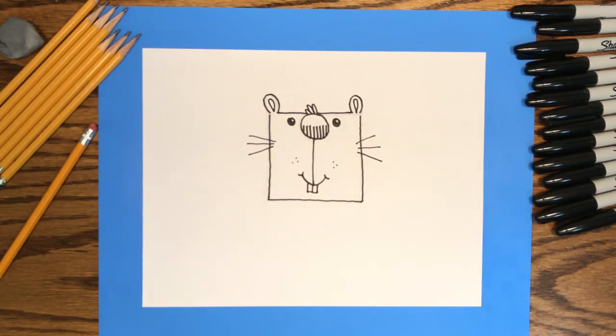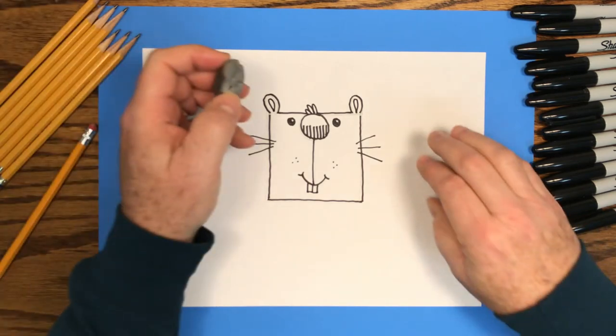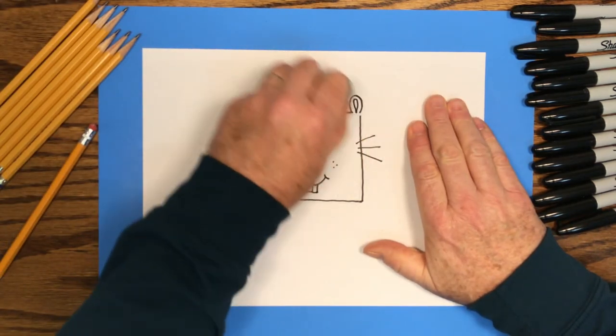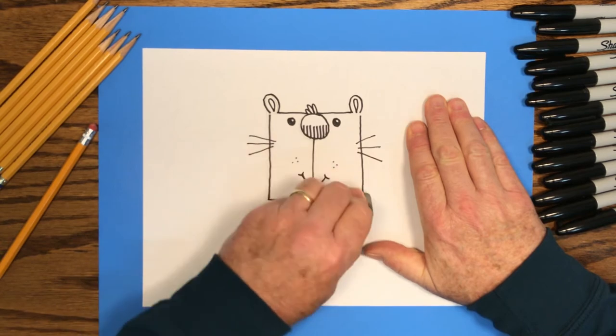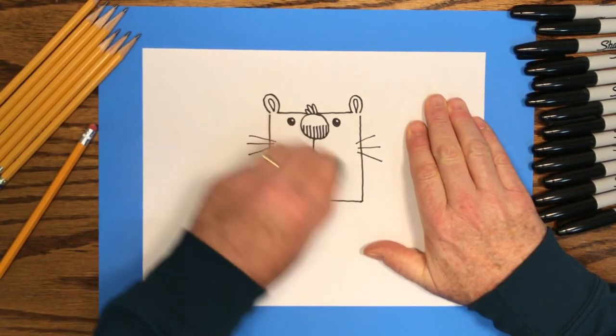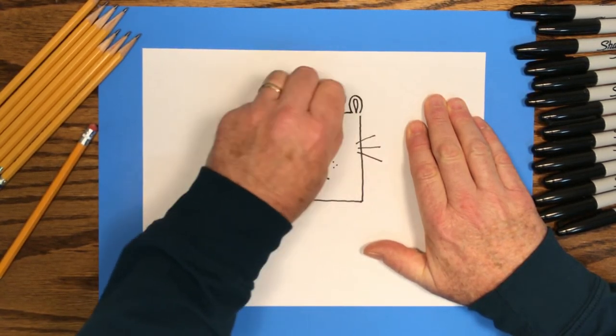We'll come back with an eraser and erase the pencil lines that we started with. Those were put there so we'd know where to put the black marker lines. But we finished the marker drawing so we won't need the pencil lines.